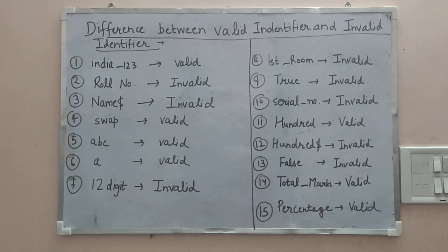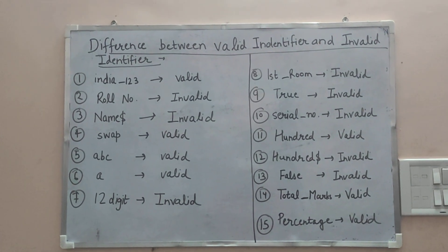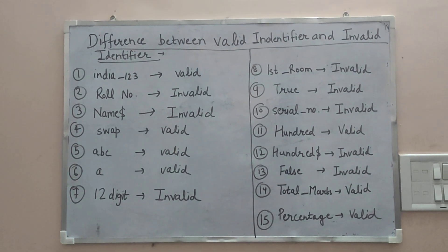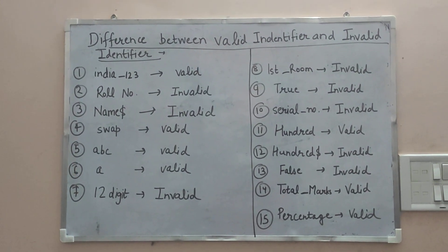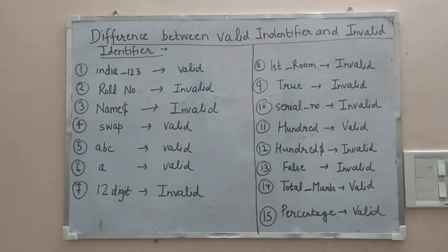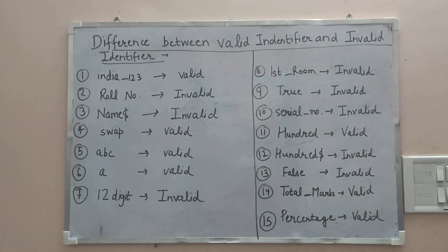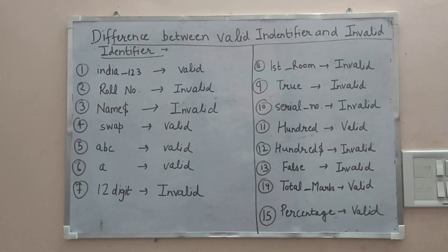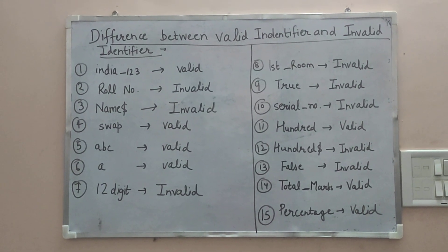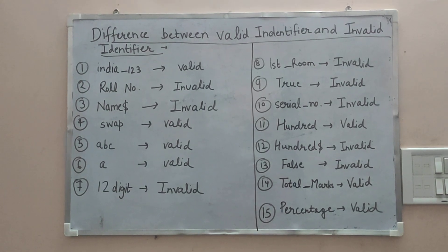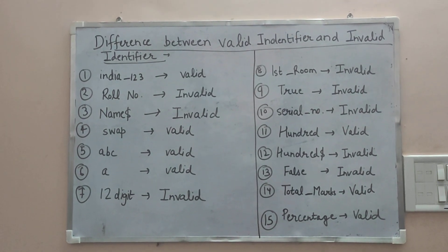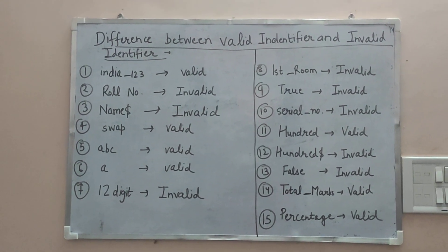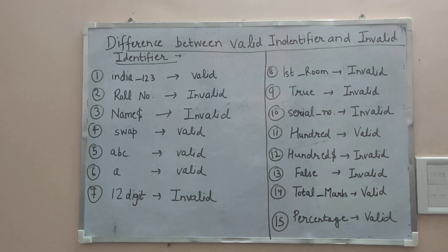The tenth is `serial_no.` — 'serial' is a character, fine; underscore is fine; 'no' is fine — but after 'no' there is a full stop, which is a special character, so that's why it is invalid.